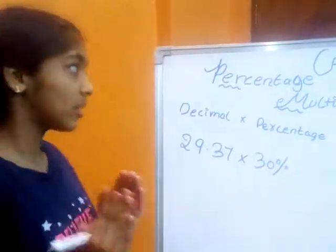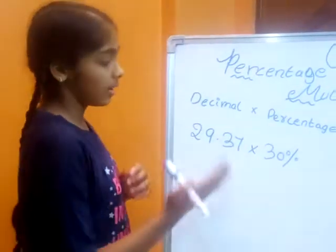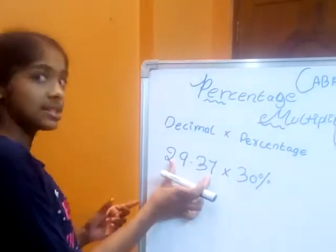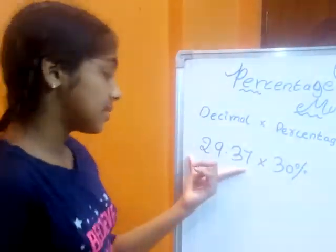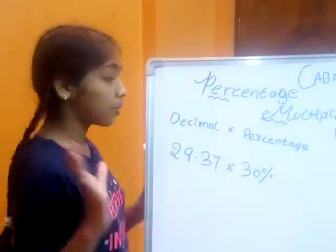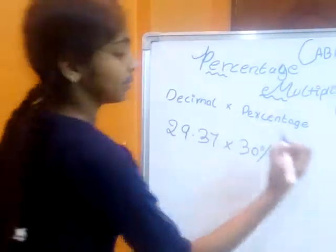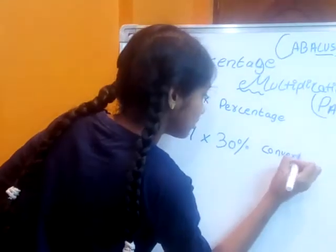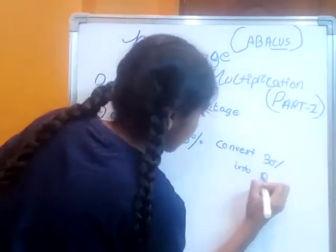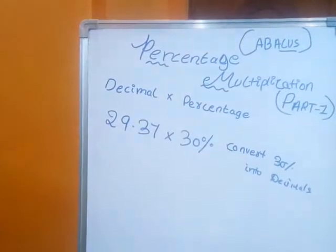I am going to tell one important thing. In decimals we will only multiply decimal into decimals, or decimal into normal numbers. Here we need to multiply decimal into decimal, so we need to convert 30% into a decimal. Let us see how we will convert it.